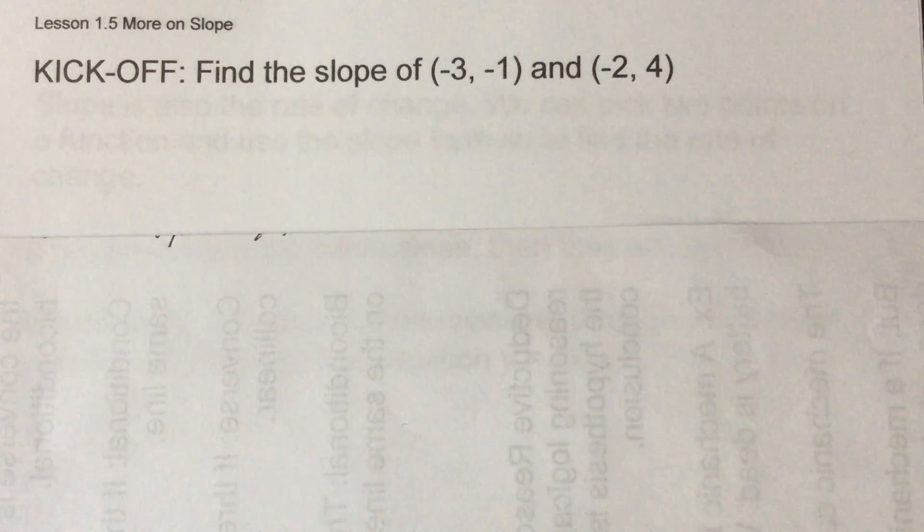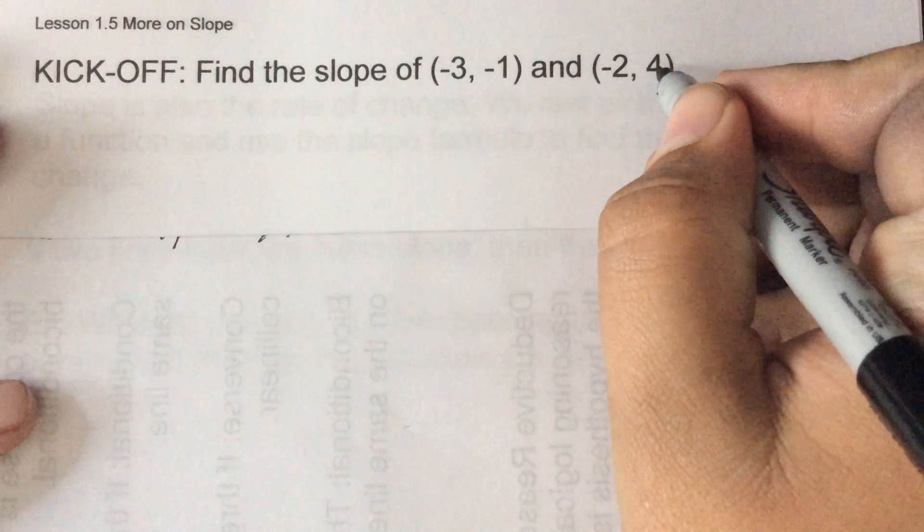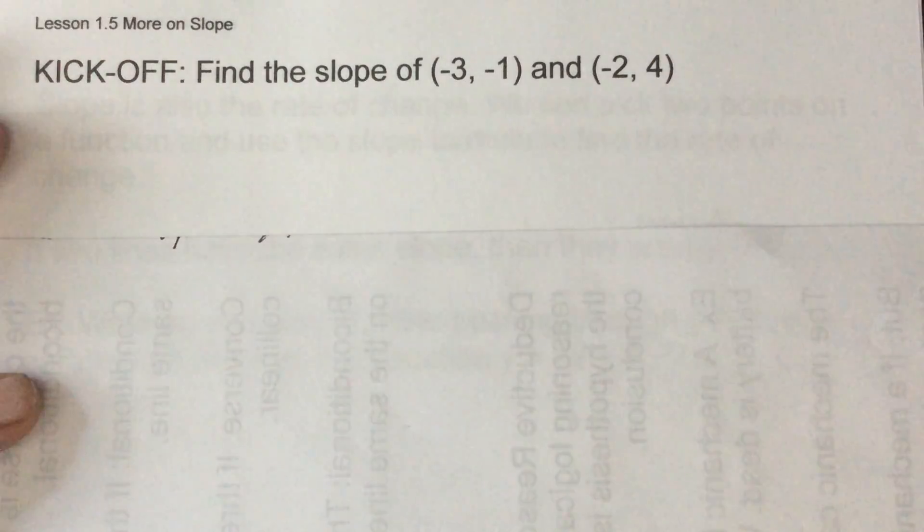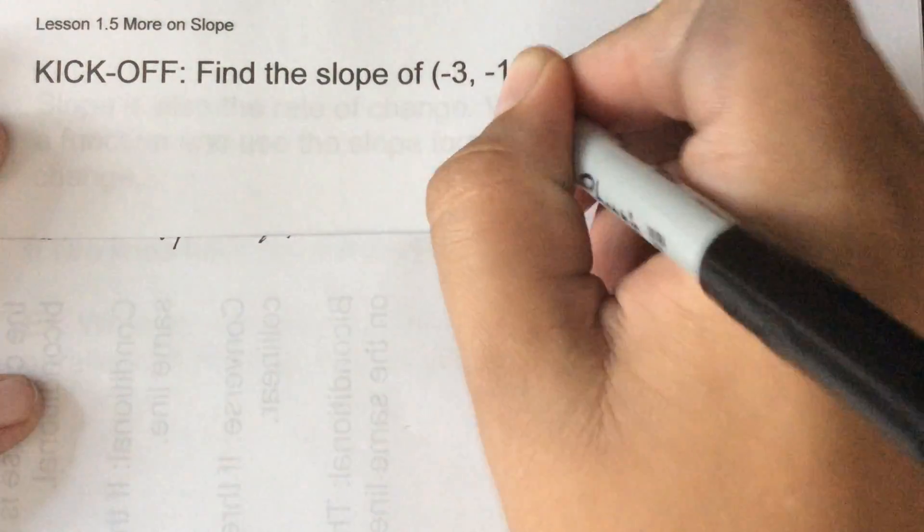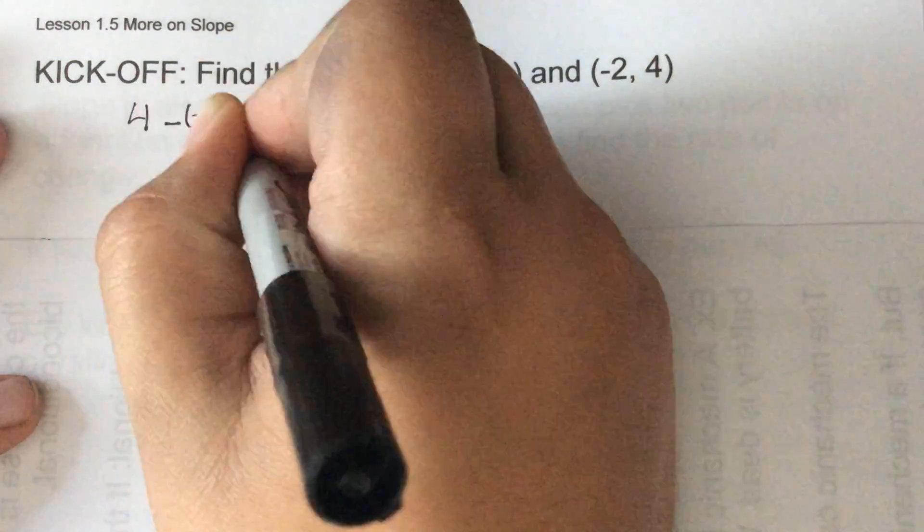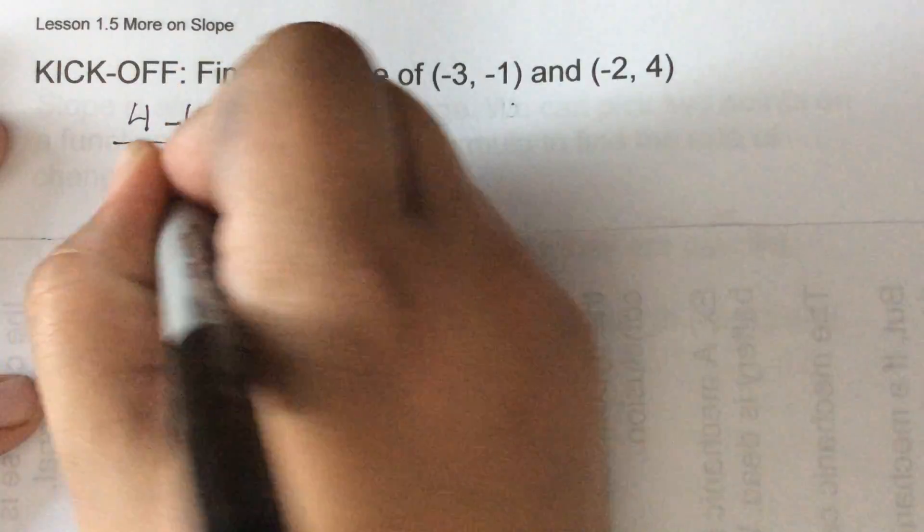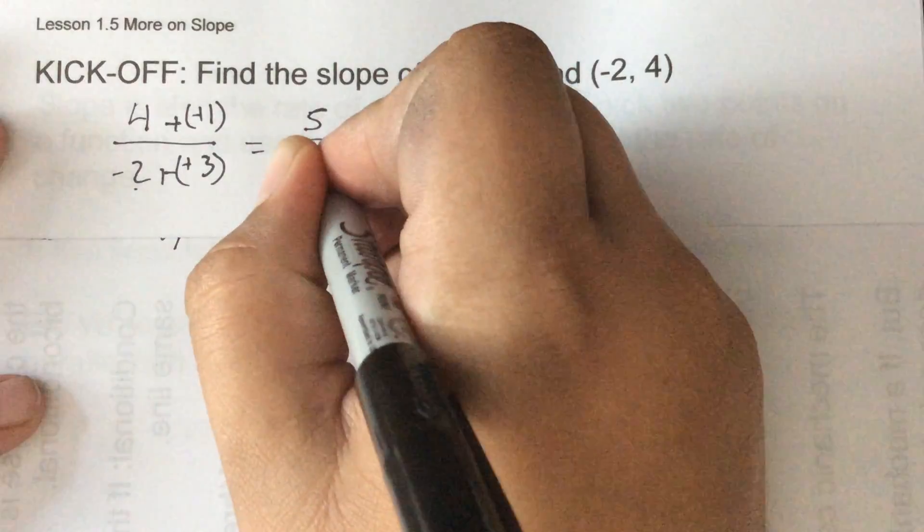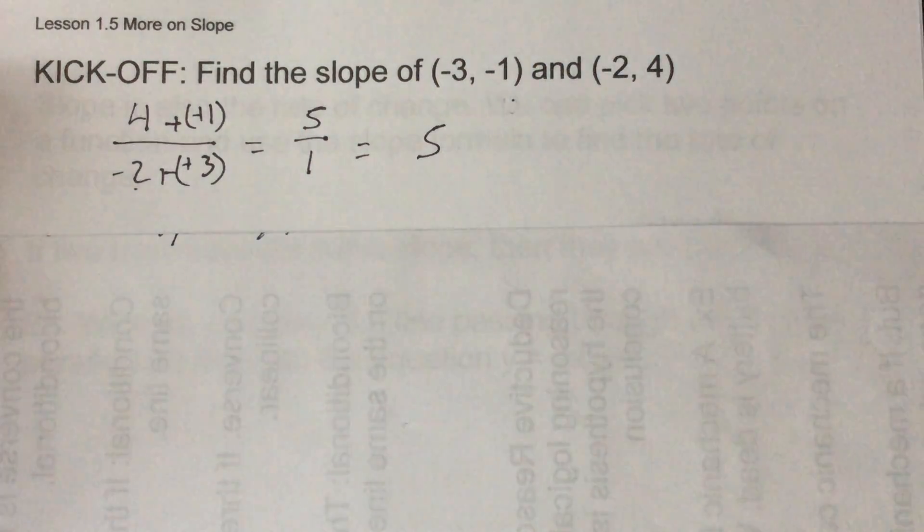Alright, continuing on with chapter one, about halfway through, continuing with more slope. Finding the slope - remember we are y's over x's, so it doesn't matter which one you start with but whichever one you do start with that x as well. So I'm gonna start with the four, so four minus the other y of negative one over negative two minus negative three. Well minus and negative cancels so five, and one or four and one make five, negative two positive three would be one. So in other words a slope of five, so that would equal m.